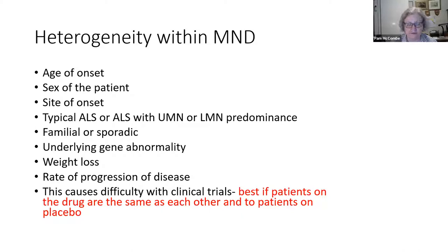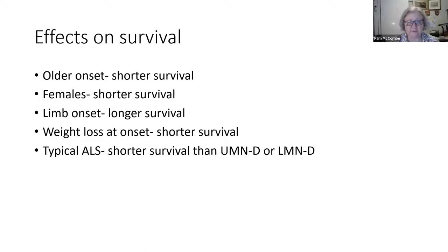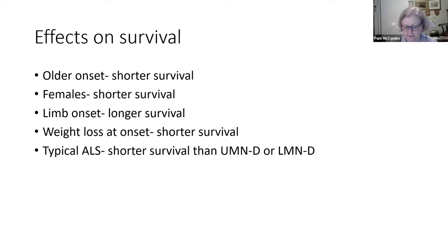The paper I'm referring to was a review looking at the effects of all of this heterogeneity on survival. People with older onset have shorter survival, females have shorter survival, limb onset has longer survival, weight loss at onset is associated with shorter survival, and typical ALS has shorter survival than those with upper or lower motor neurone predominance. I want to emphasise that these are overall statistics — even within each of those groups there's a very wide range of outcome and rates of progression, so none of this applies to individuals.